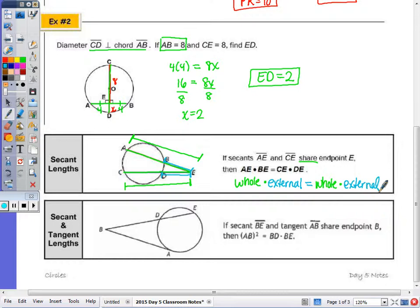So whenever I have the intersection of two secants, and they share an endpoint, it's the whole times the external equals whole times the external. So the length of the whole segment times the piece that's in the exterior, then whole times external.